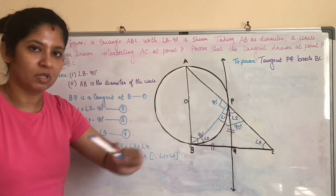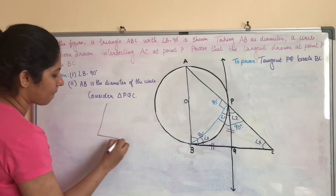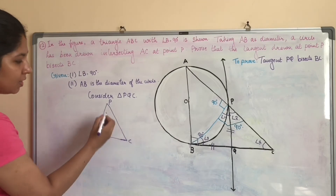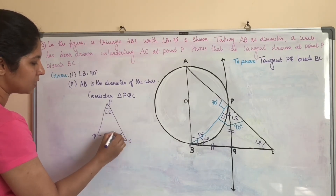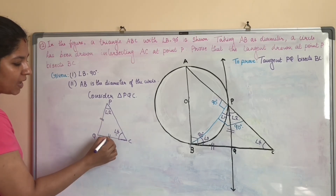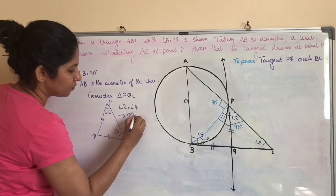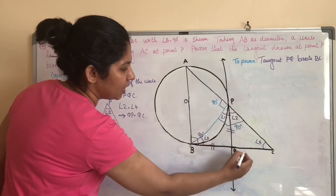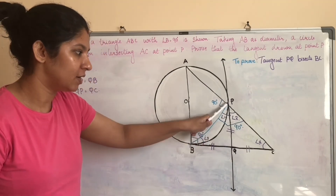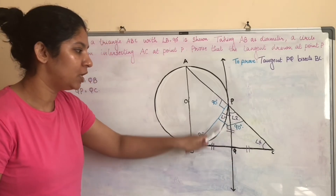Consider triangle PQC. Angle 2 equals angle 4, so by the property that sides opposite to equal angles are equal, QP equals QC. We already proved QB equals QP. Now QP is common, and QC equals QP. Therefore QB equals QC, which means Q is the midpoint of BC, and PQ bisects BC. Hence proved.